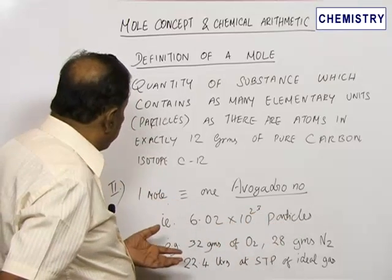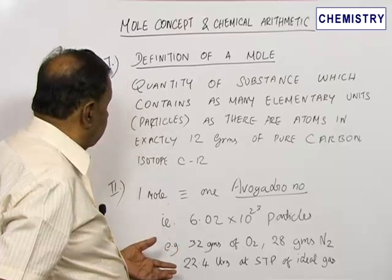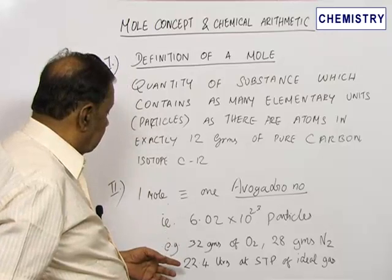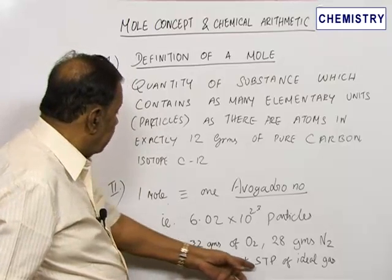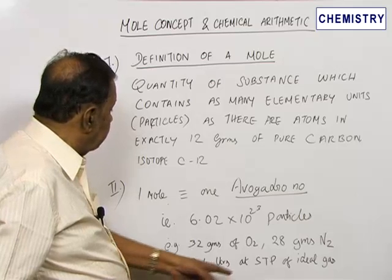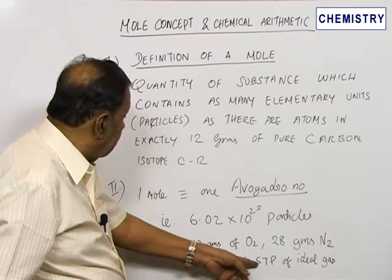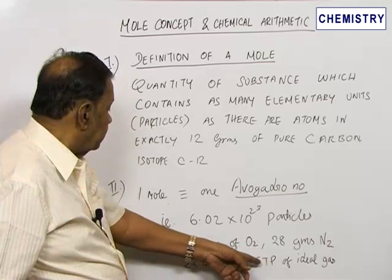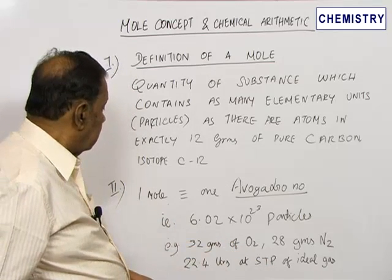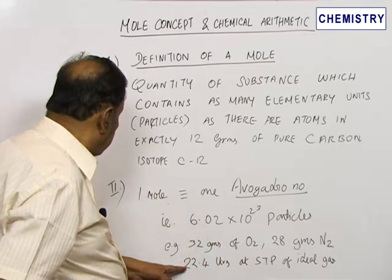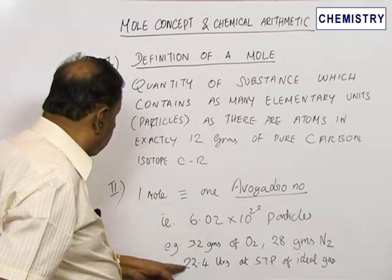The same thing can also be expressed in terms of a volume. If a gas is behaving ideally, then under standard temperature and pressure—standard temperature is 0 degrees centigrade and standard pressure is 1 atmosphere—under standard conditions of temperature and pressure, if you take one mole of an ideal gas, its volume will be 22.4 liters.